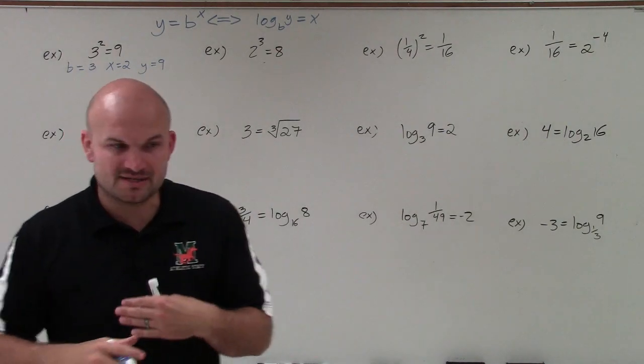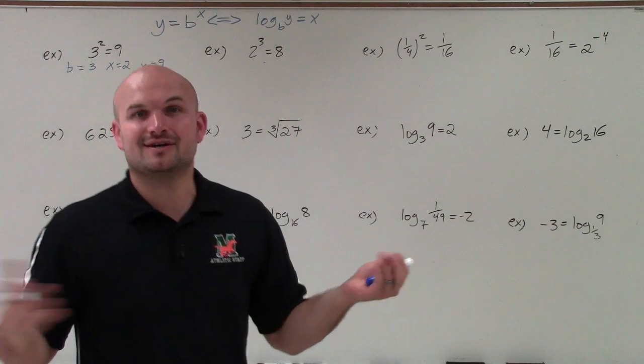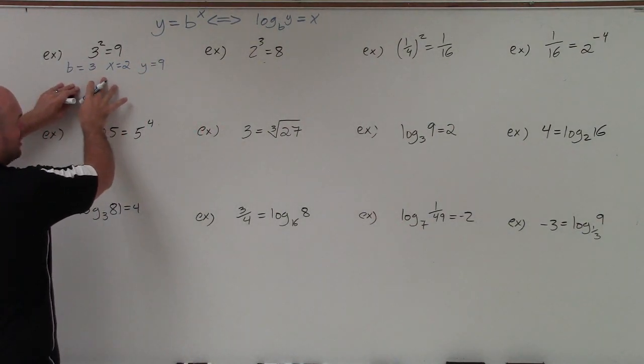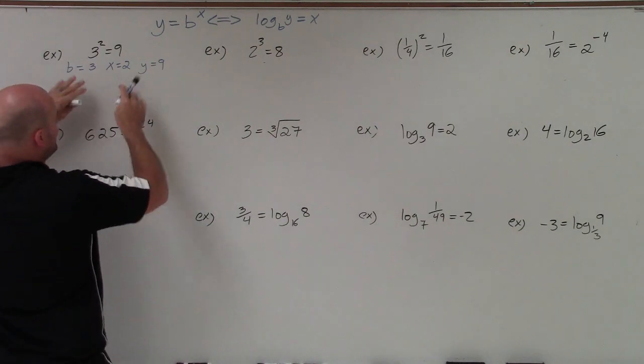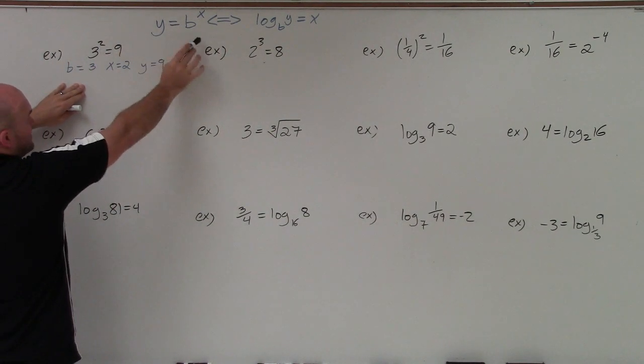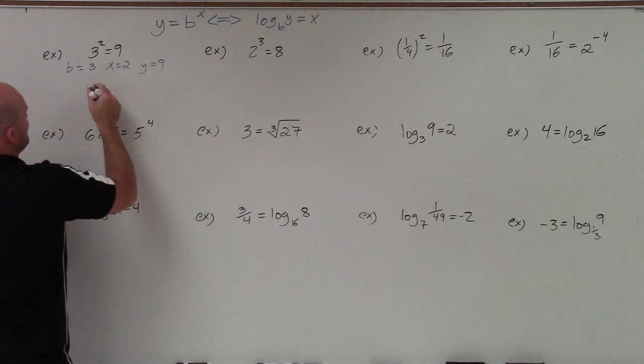And the reason why I'm doing 12 examples is because the more and more and more you do this, the faster and quicker and easier it is for you to understand. Now I want to convert this to logarithmic form. So all I'm simply going to do is take my values of b, x, and y, which I got from this equation, this form of exponential, and I'm going to rewrite them in the log form.